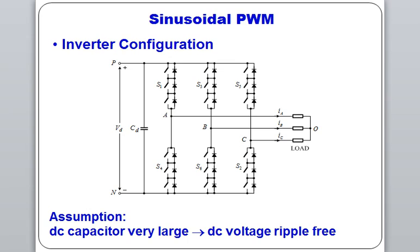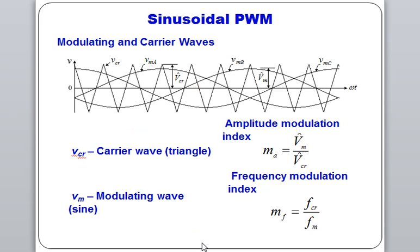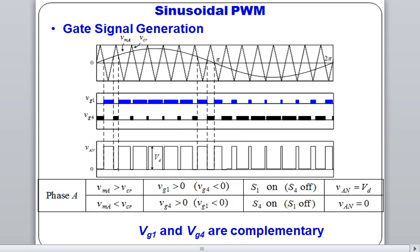The next type of PWM is Sinusoidal PWM. For the inverter configuration VSC, we have 6 switches, and there can be many levels — multi-level, multi-pulse type of VSC. If we consider a bridge, we assume the DC capacitor has very large capacity so that ripple-free voltage can be obtained. In Sinusoidal PWM, we have a sinusoidal wave (modulating wave) and a carrier signal — a triangular wave. The intersection points are used to find out the gate signals to switch on and switch off the thyristors connected in each leg.